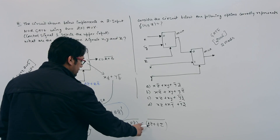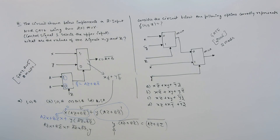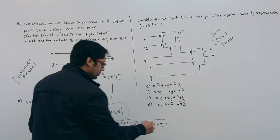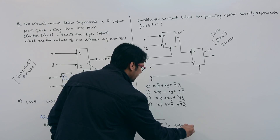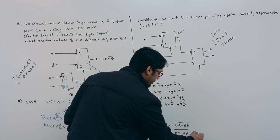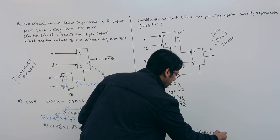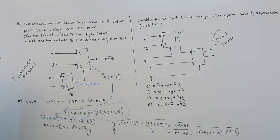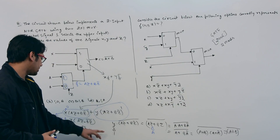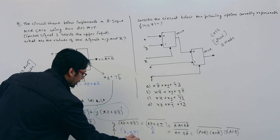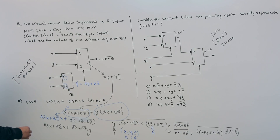Now let us take Z equal to A. If Z equals A, the expression becomes (A·A + B·A complement) whole complement, which is (A + B·A complement) whole complement. Applying the distributive law, this becomes (A+B)·(A+A complement) whole complement, which equals (A+B) whole complement. This is exactly the NOR gate equation we need, so the answer is X=0, Y=1, Z=A.